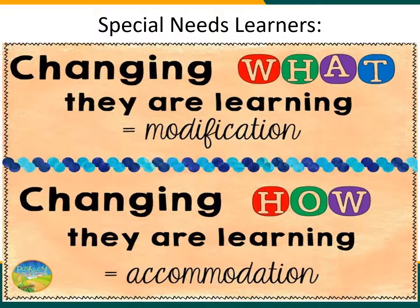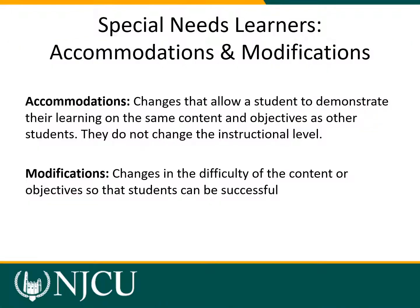Let's talk about special needs learners and assessment. It's important that you understand two different terms: modification and accommodation. An accommodation is changing how students are learning; a modification is changing what they are learning. Accommodations are changes that allow a student to demonstrate their learning on the same content and objectives as the other students — they do not change the instructional level. Modifications change the difficulty of the content or the objectives so that students can be successful.